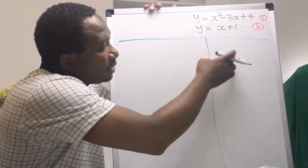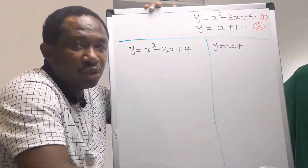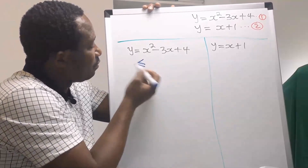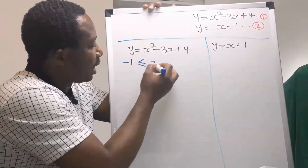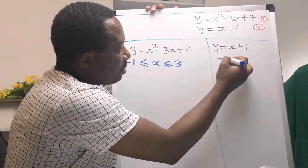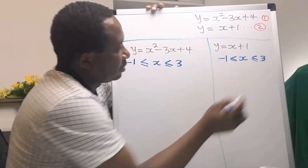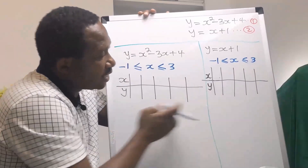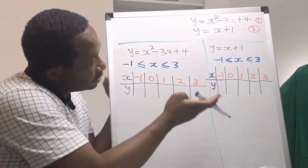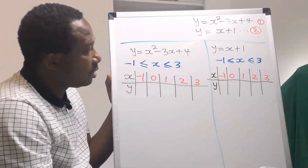To apply the graphical method, we are going to separate the two equations. Next, we are going to choose some range of values. Here, I might decide to choose from minus 1 to 3 for both equations. Then we are going to draw a table for the two equations and consider the range of our chosen integers.